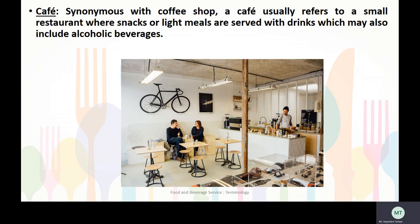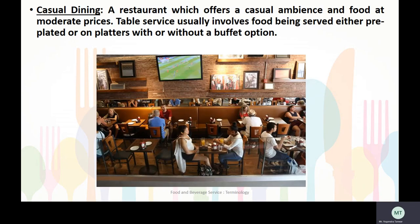The next terminology is cafe. Cafe is synonymous with coffee shop. It usually refers to a small restaurant where snacks or light meals are served with drinks, which may also include alcoholic beverages. Next is casual dining — a type of restaurant which offers a casual ambiance and food at moderate prices. Table service usually involves food being served either pre-plated or on platters, with or without a buffet option.